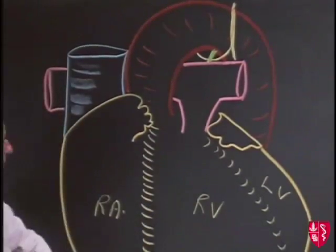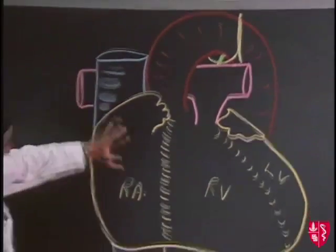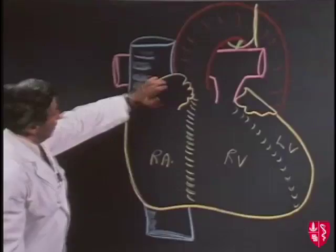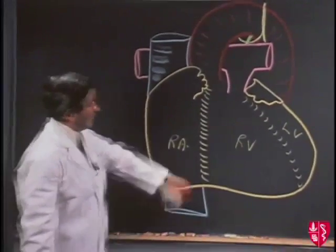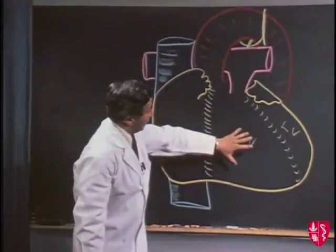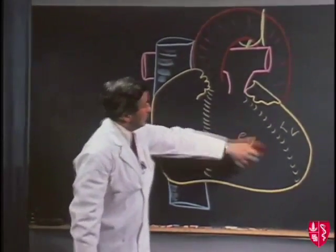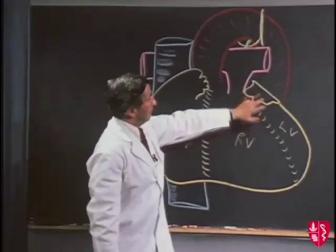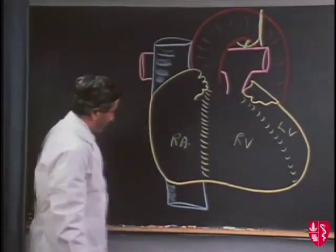On the anterior surface of the heart, we have the right atrium, the right auricular appendix, the right ventricle, the left ventricle, and the left auricular appendix.